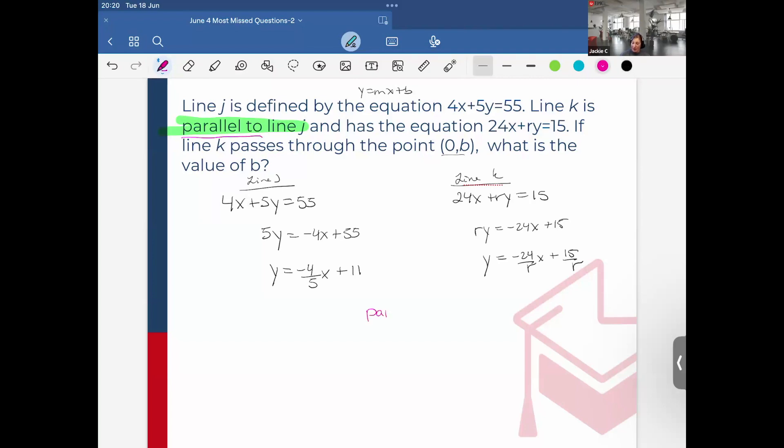Okay, so remember parallel lines have the same slope. So that means I can take the slopes and I can set them equal to each other to determine what r is. I know I'm not asked for r, but this will come in handy. So negative 4/5 is equal to negative 24/r, so negative 4r is equal to 24 times 5, negative 120. Divide everything by negative 4, and this will give me that r is equal to 30.